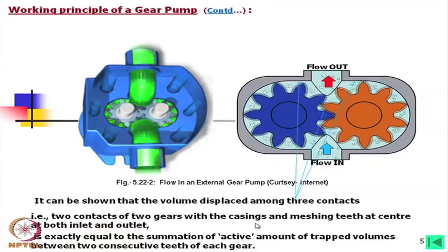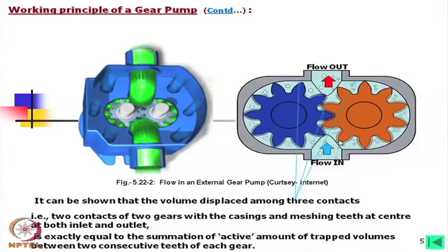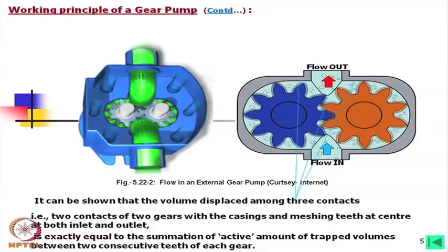The displaced volume is exactly equal to the summation of the active trapped volumes between two consecutive teeth of each gear. This means the total expansion or compression volume will be exactly equal to these two pocket volumes. However, we must remember one important point: we must subtract the inactive volume — the small volume of oil that comes back to the suction side when the gear is stopped. While calculating, we have to account for this part.